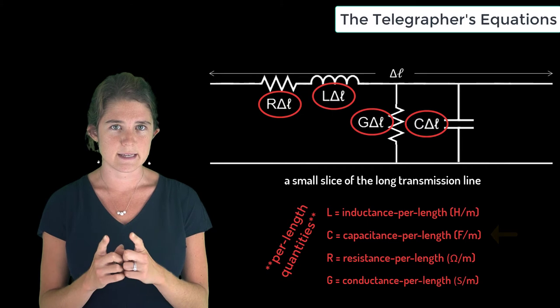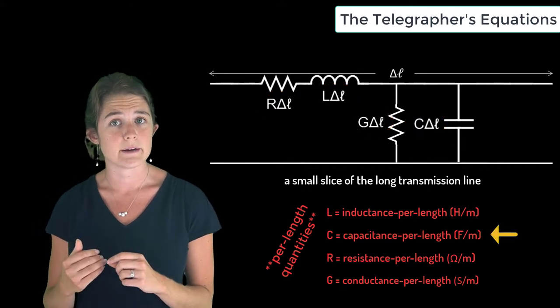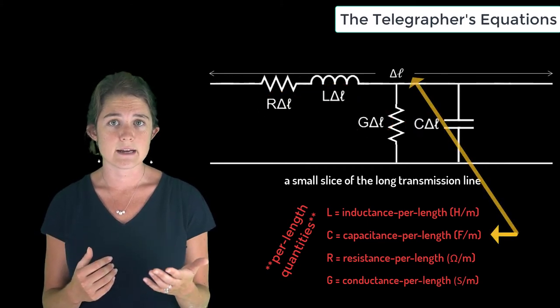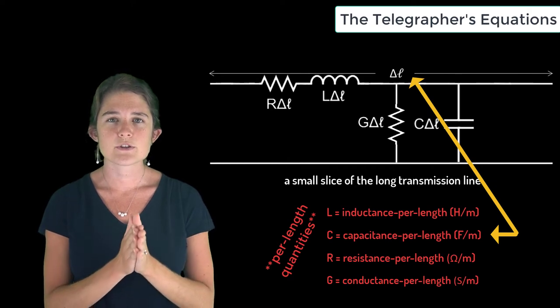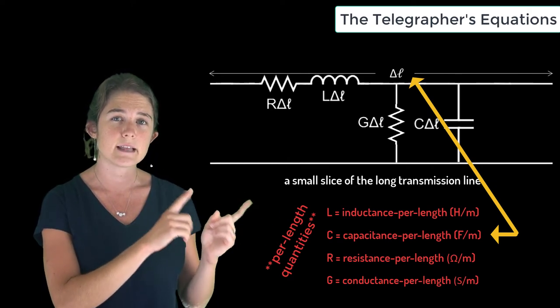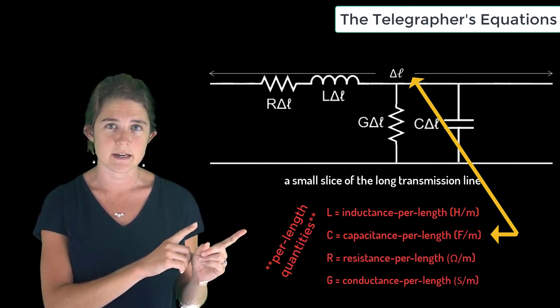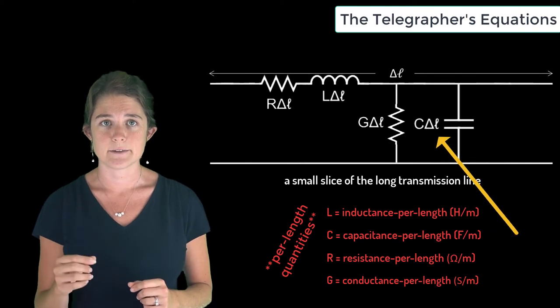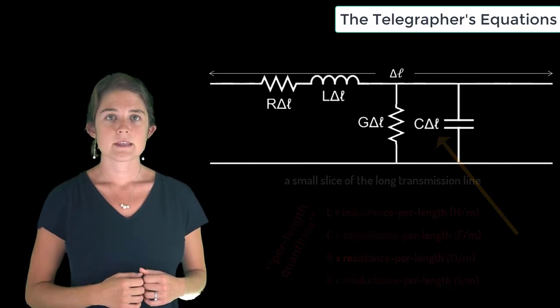So as an example, the capacitance C has units of farads per meter, and length Δℓ has units of meters, so the total capacitance of this electrically small length of transmission line is C times Δℓ.